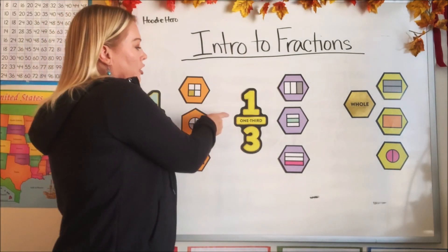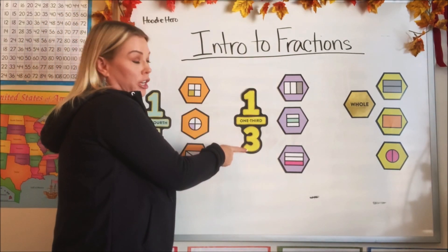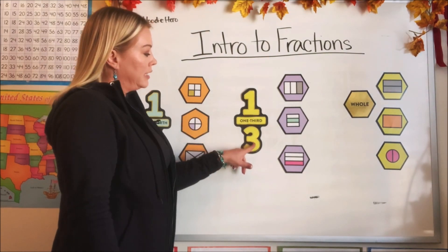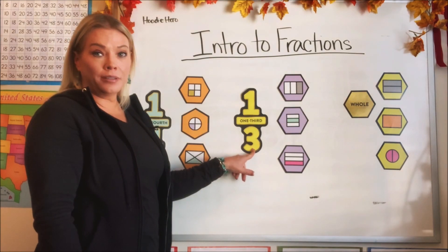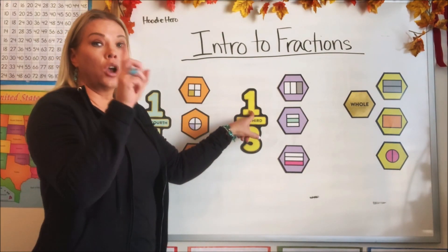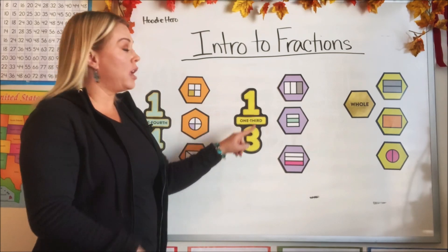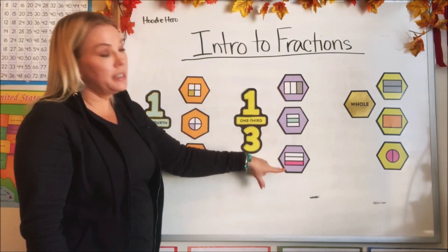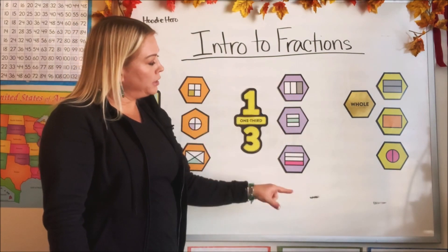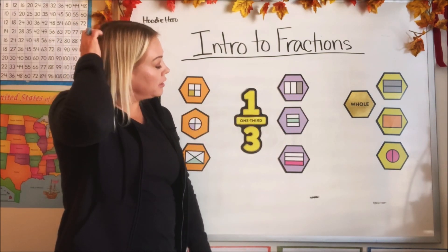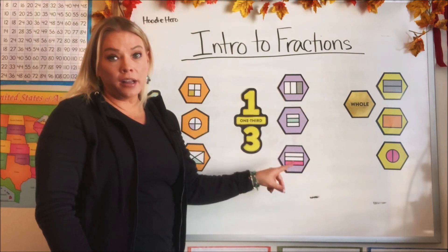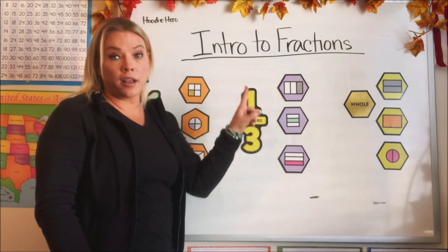Let's move on to this fraction — one-third, one over three. How many parts will each fraction be divided into? Three parts. And how many parts are we talking about? One part of the three. We have three examples again; they're all divided into three parts. Some are going up and down, some are going horizontally. Only one of each of these three is highlighted, because we're only talking about one of the three parts.